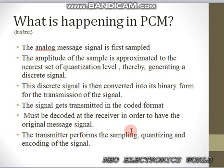Sampling means we convert the signal into a discrete signal in time. After quantization, we get a signal which is discrete in time as well as in amplitude. Then we pass the signal through an encoder and we get a binary form of the signal — binary coded pulses.